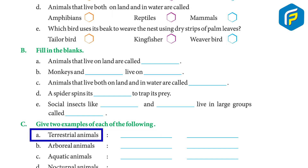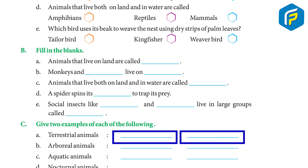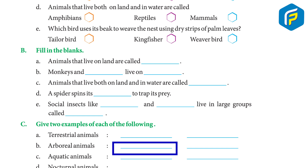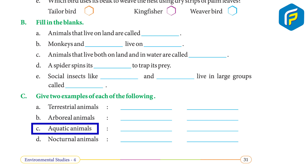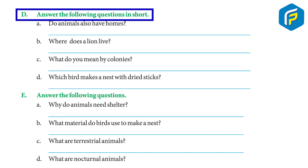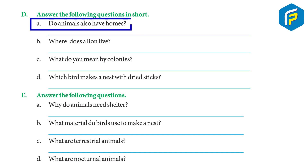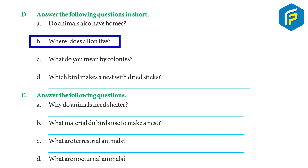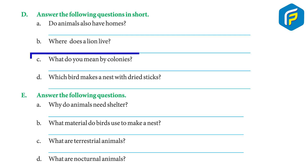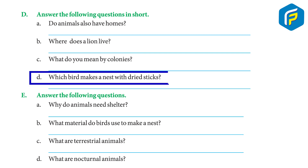Exercise Part C — Give two examples of each: terrestrial animals (dog, cat), arboreal animals (monkeys, chimpanzee), aquatic animals (fish, shark), nocturnal animals (owl, rats). Part D — Short answers: Do animals have homes? Yes, animals need a safe place to live in different kinds of homes. Where does a lion live? A lion lives in a den. What are colonies? Some insects live in large groups known as colonies. Which bird makes a nest with dried sticks? The weaver bird uses dried strips of palm leaves to make a nest.